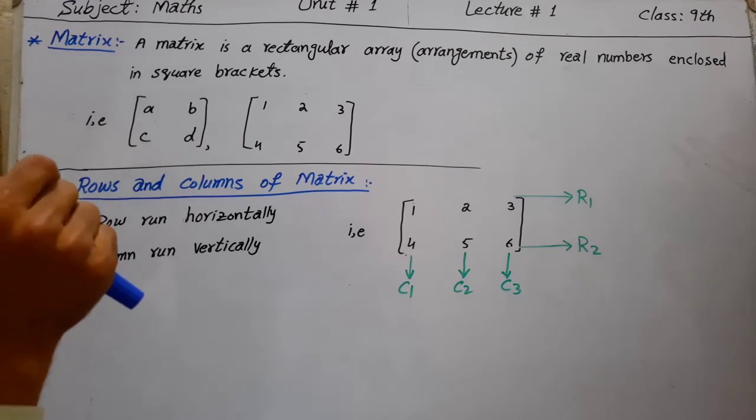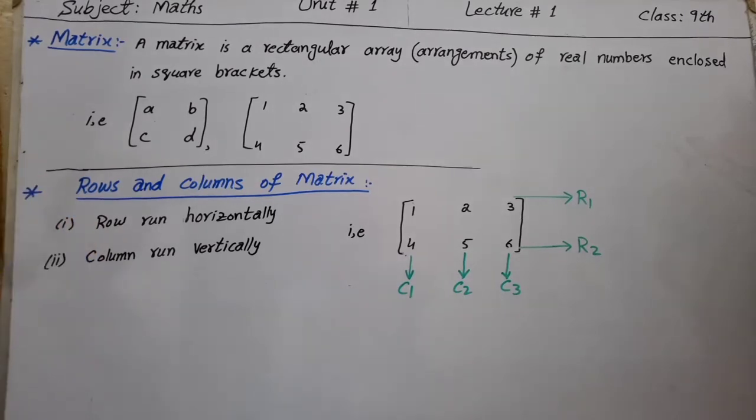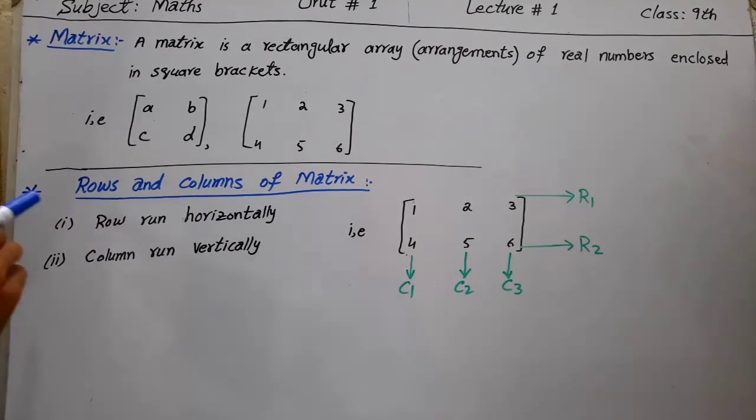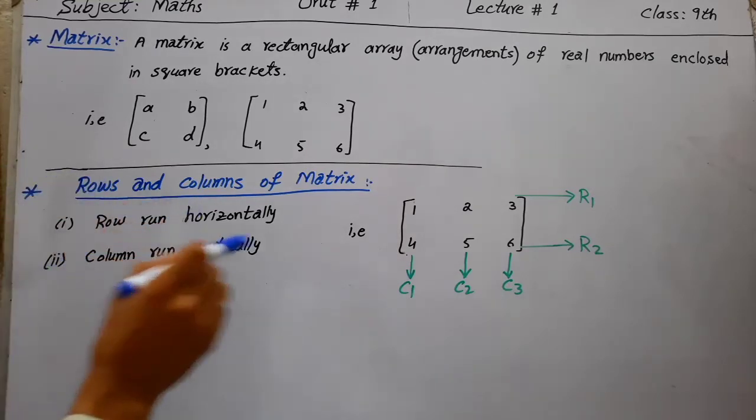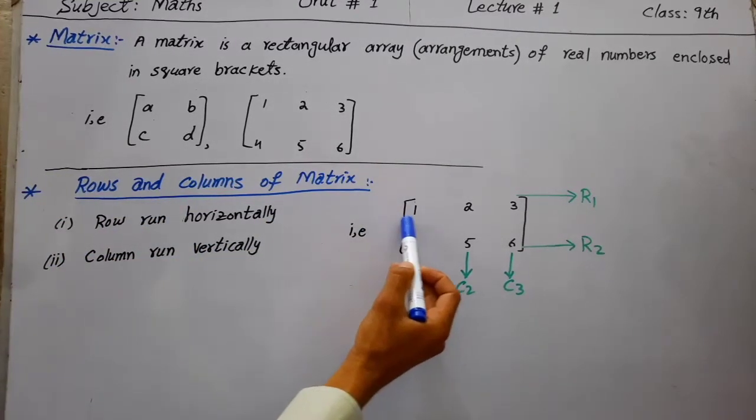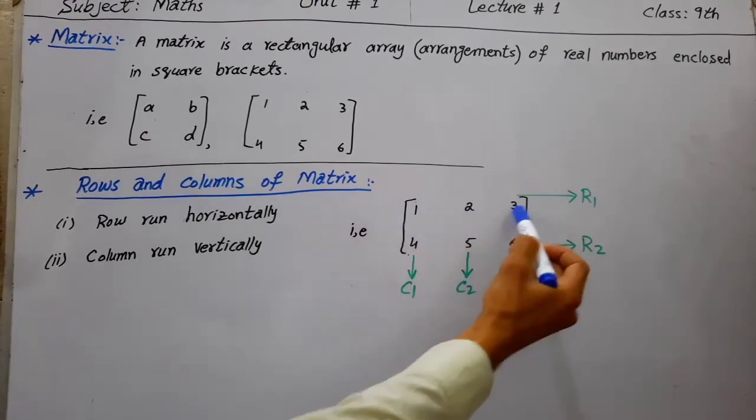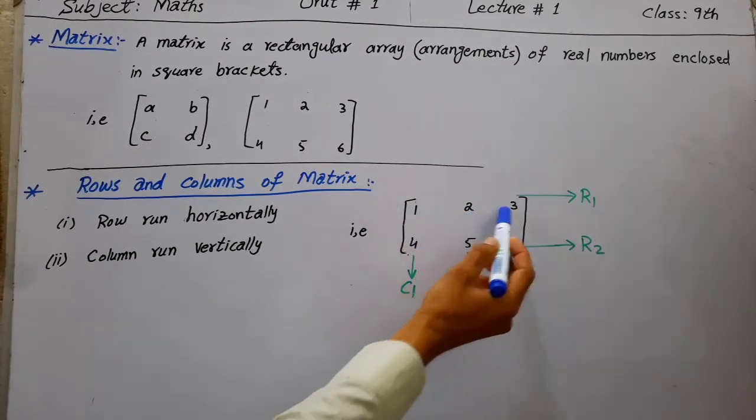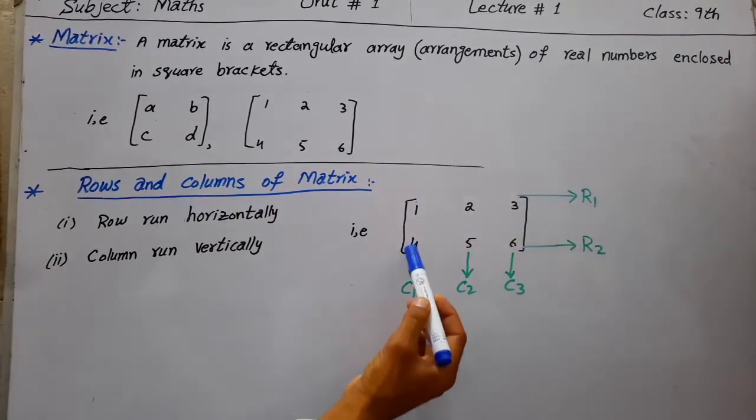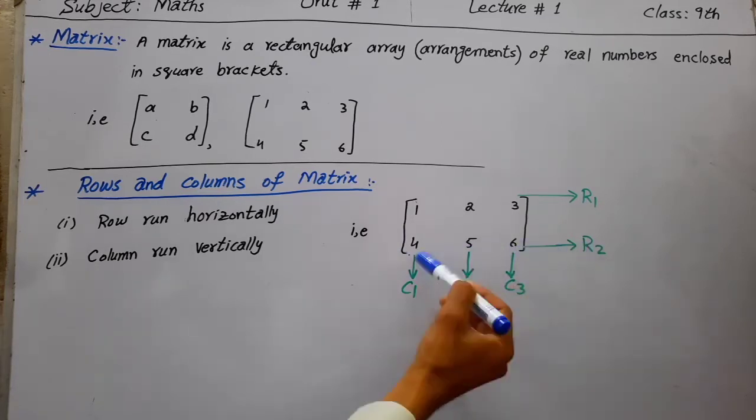Rows and columns of a matrix. A row runs horizontally - horizontal arrangement. For example, 1, 2, 3 is row number one, and 4, 5, 6 is row number two.